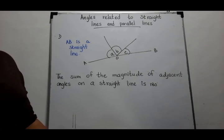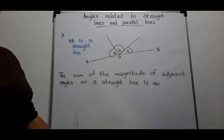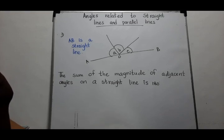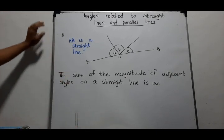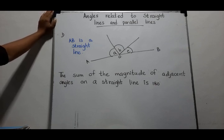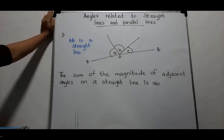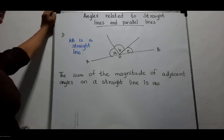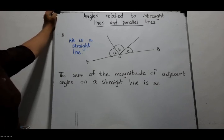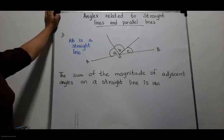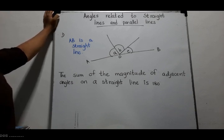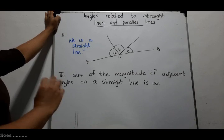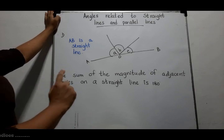First, you have learned many types of angles up to now — adjacent angles, supplementary angles, and vertically opposite angles. In this lesson, we are going to discuss the adjacent angles on the straight line. This part you have learned in Grade 8 also. Now, in this lesson, we are going to learn it as a theorem.